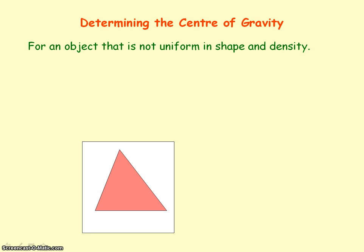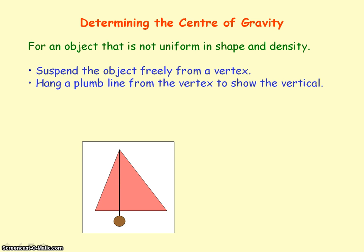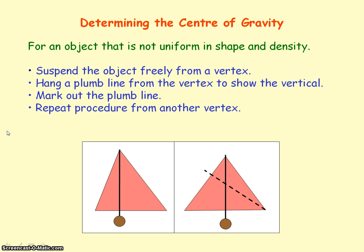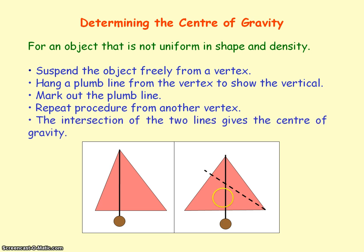To determine the centre of gravity for an object that is not uniform in shape and density, you first need to hang the object freely from one edge and hang a plumb line from that edge to show the vertical — a plumb line is essentially a pendulum. The weight of the object will act along the vertical, so you mark out the vertical line from the plumb line. Then repeat the procedure from another edge to get a second vertical line. The intersection of the two lines tells us where the centre of gravity is, where the weight of the object appears to act.